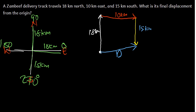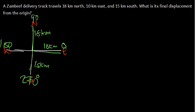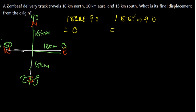To resolve these vectors into x and y components, for the first vector: x1 = 18 cos 90° = 0. Then y1 = 18 sin 90° = 18. So x1 is zero and y1 is 18.